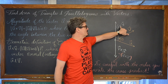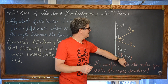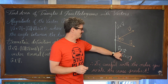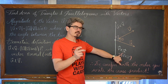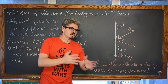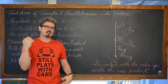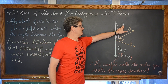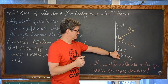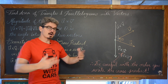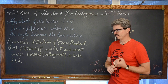Vector u crossed with vector v would give you an opposite vector as opposed to vector v crossed with vector u. So when you change the order of your cross product notation, you are going to get an opposite vector. Be careful with the order that you write this notation when doing a problem about cross product. If a question says find vector u cross vector v, don't accidentally write vector v cross vector u, because you will get an opposite vector — same magnitude, but in the opposite direction.